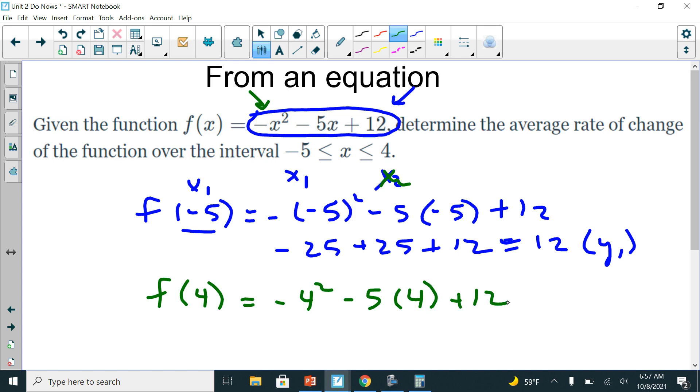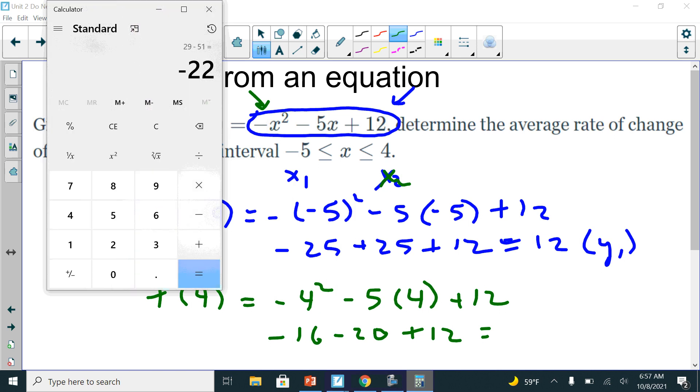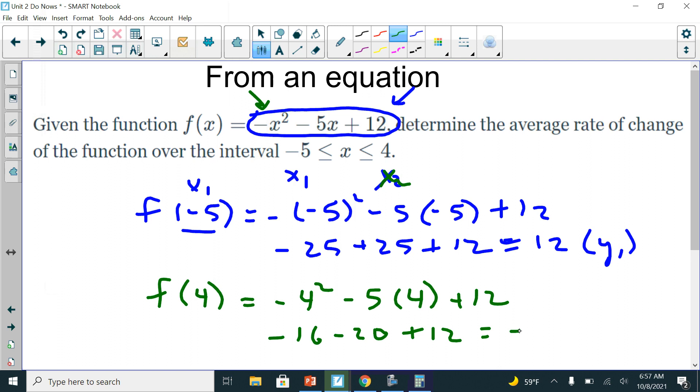And this is going to give me my y2. So this is negative 16 because 4 squared is 16. There's a negative sign in front, so that's negative 16. Negative 5 times 4 is negative 20, and then I have to add 12 to that. So I have negative 36 plus 12. Negative 36 plus 12 is 36 minus 12, which is equal to 24, so that's negative 24. Use your calculator to help you get that. And there's your y2.